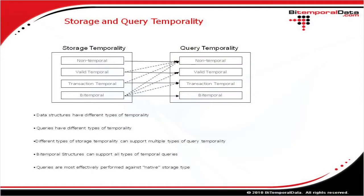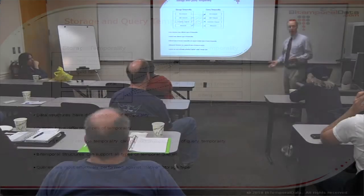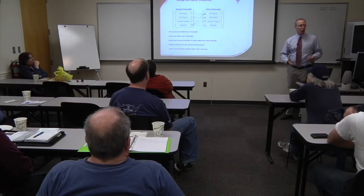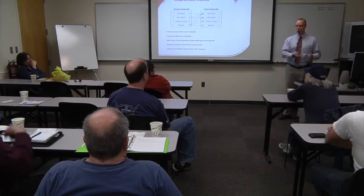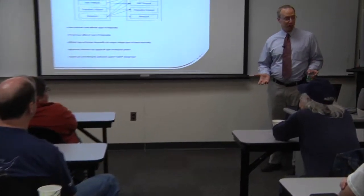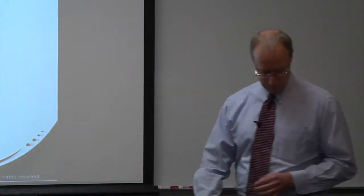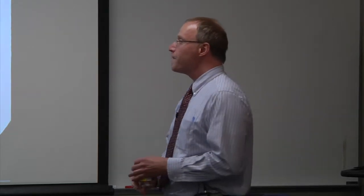The solid lines show the native storage type for each query temporality, and the dotted lines show which query types can be serviced by different storage types even if they're not their native temporality. This is important because queries run against their native storage type will perform better and be the simplest to write — just the right amount of complexity needed.